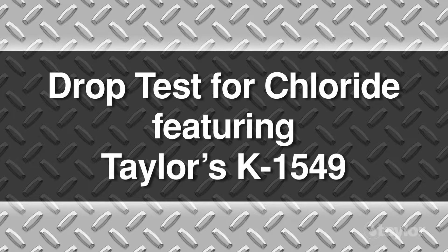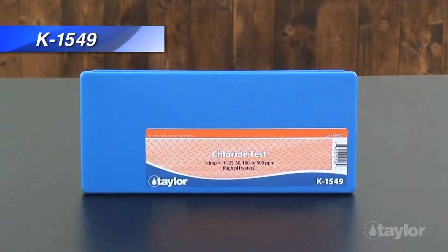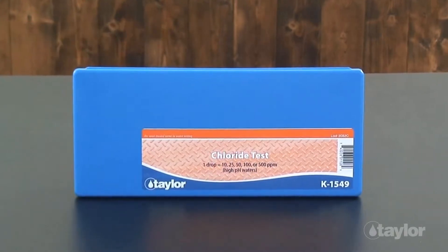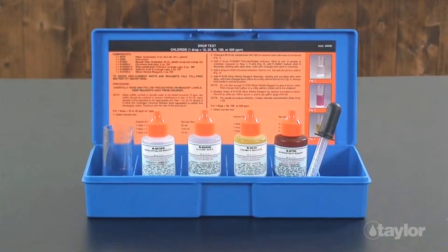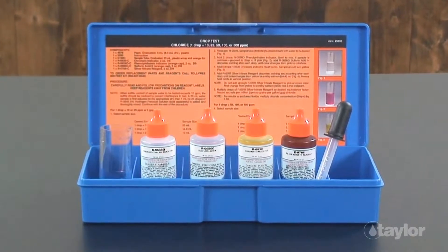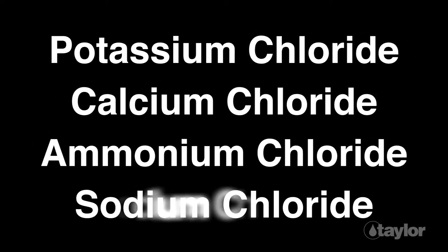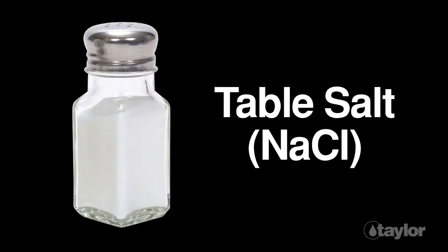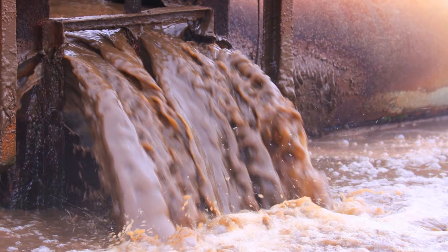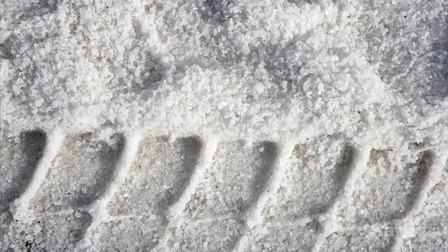Drop test for chloride featuring Taylor's K1549. Who should use this kit? Chlorides are salts that are formed when the gas chlorine is combined with a metal. They are used extensively in the production of industrial chemicals, fertilizers, and in the salts used to treat roads. Some examples of chloride salts are potassium chloride, calcium chloride, ammonium chloride, and sodium chloride — table salt.